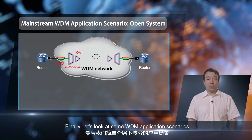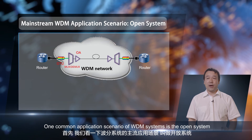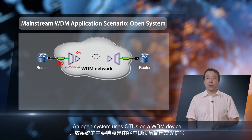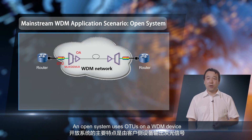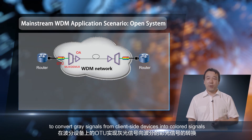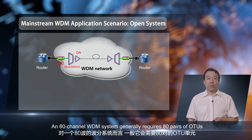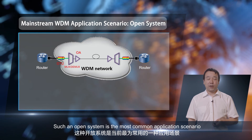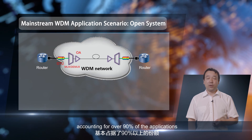Finally, let's look at some WDM application scenarios. One common application scenario of WDM systems is the open system. An open system uses OTUs on a WDM device to convert gray signals from client-side devices into colored signals. An 80-channel WDM system generally requires 80 pairs of OTUs. Such an open system is the most common application scenario, accounting for over 90% of applications.